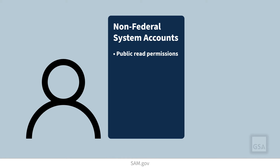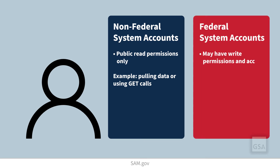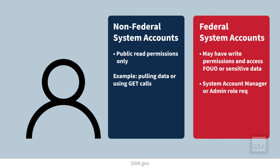If you are just pulling data or using GET calls, you will only need read permissions. Non-federal users can have only public read permissions. If you are writing, sending, or using POST or PUT calls, then you need write permissions. Only federal accounts are allowed to write data, and only federal accounts can access For Official Use Only (FUO) data or sensitive data permissions.